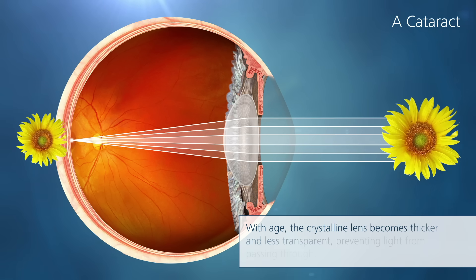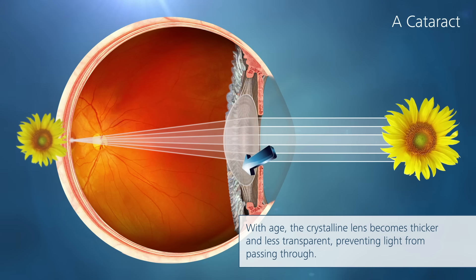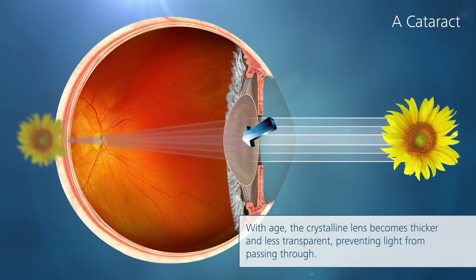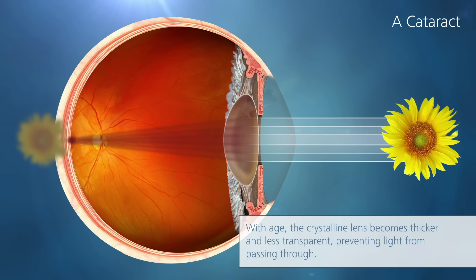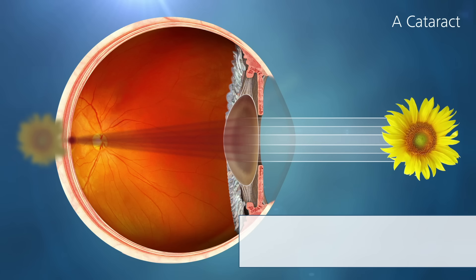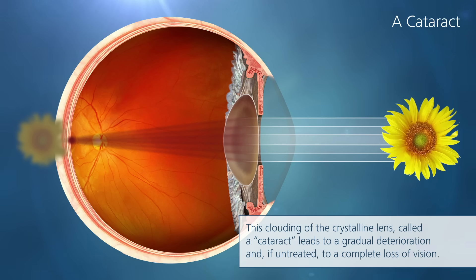With age, the crystalline lens becomes thicker and less transparent, preventing light from passing through. This clouding of the crystalline lens, called a cataract, leads to a gradual deterioration and, if untreated, to a complete loss of vision.